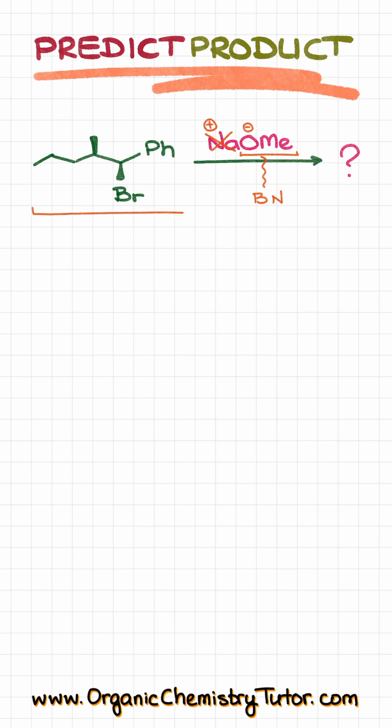Now, looking at our starting material over here, we also see that we have a secondary position with our leaving group, which is a bromine in this case. And when it comes to a combination of a secondary leaving group and the reagent, which is a base and a nucleophile, the most likely outcome of that reaction is going to be an E2 reaction. So, we're looking at the elimination reaction.